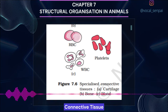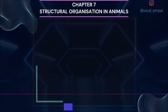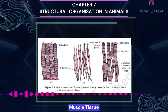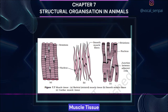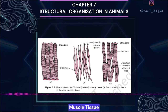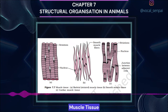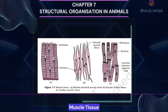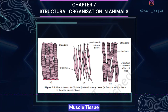Muscle tissue. Each muscle is made of many long cylindrical fibers arranged in parallel arrays. These fibers are composed of numerous fine fibrils called myofibrils. Muscle fibers contract (shorten) in response to stimulation, then relax and return to their uncontracted state in a coordinated fashion. Their action moves the body to adjust to environmental changes and maintain the positions of various body parts. In general, muscles play an active role in all movements of the body. Muscles are of three types: skeletal, smooth and cardiac.